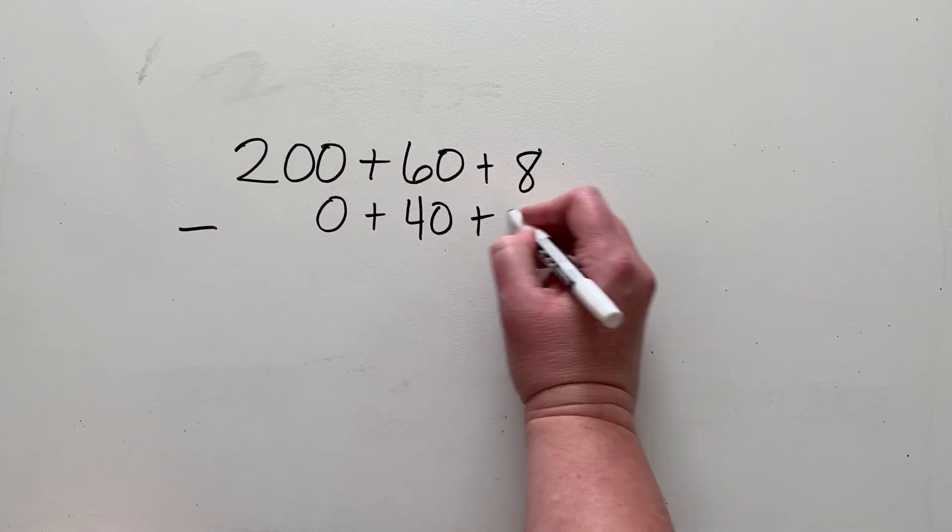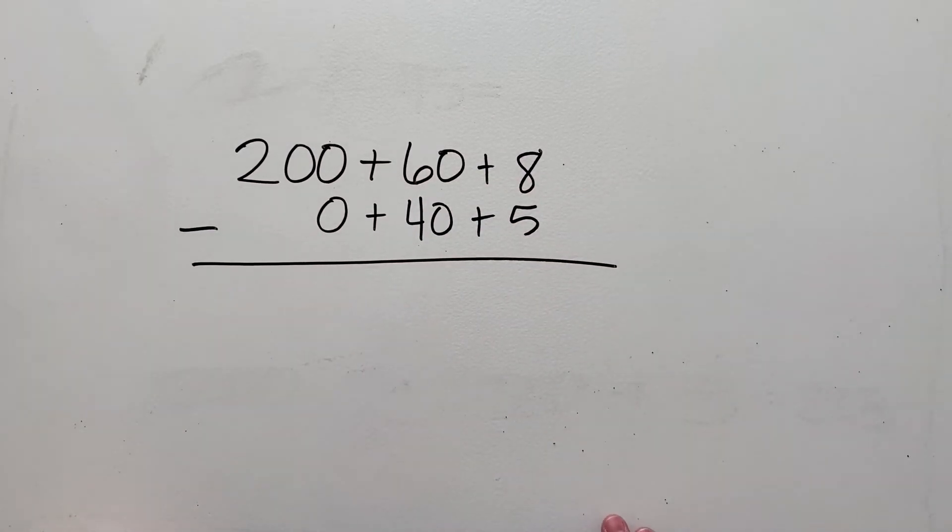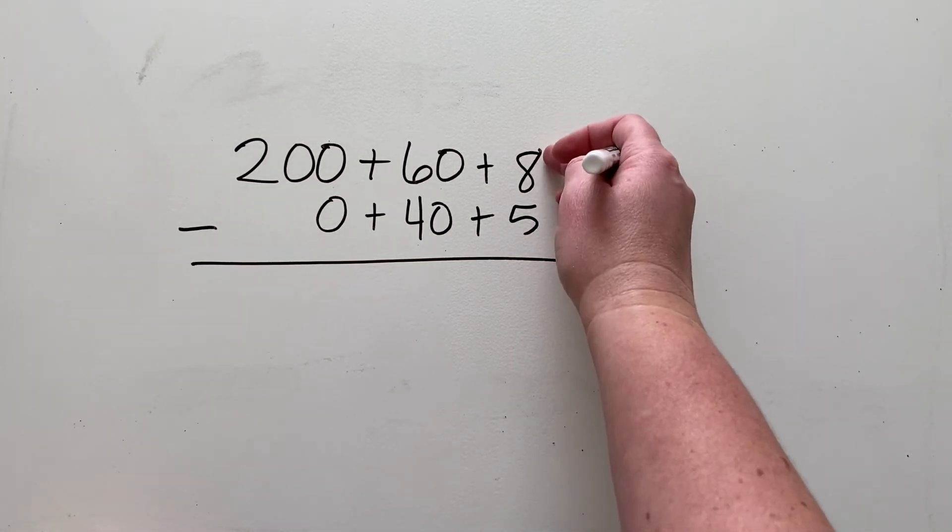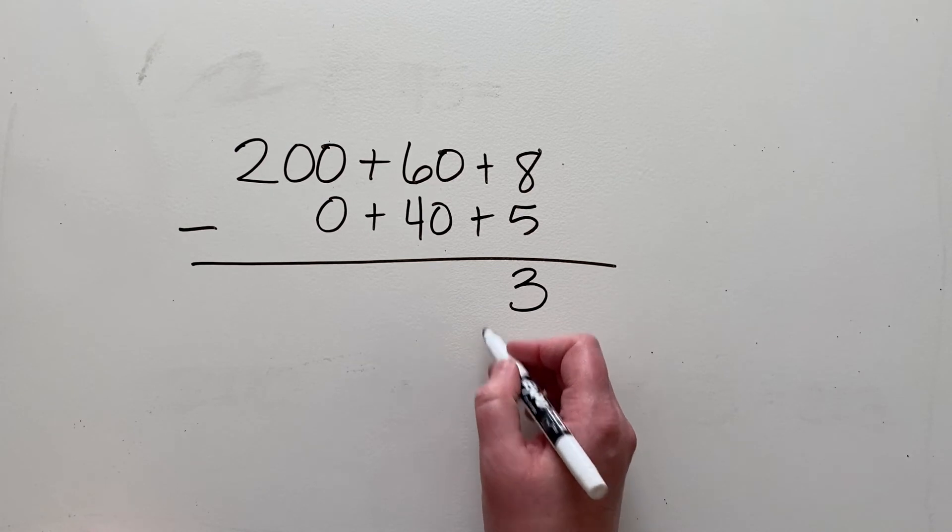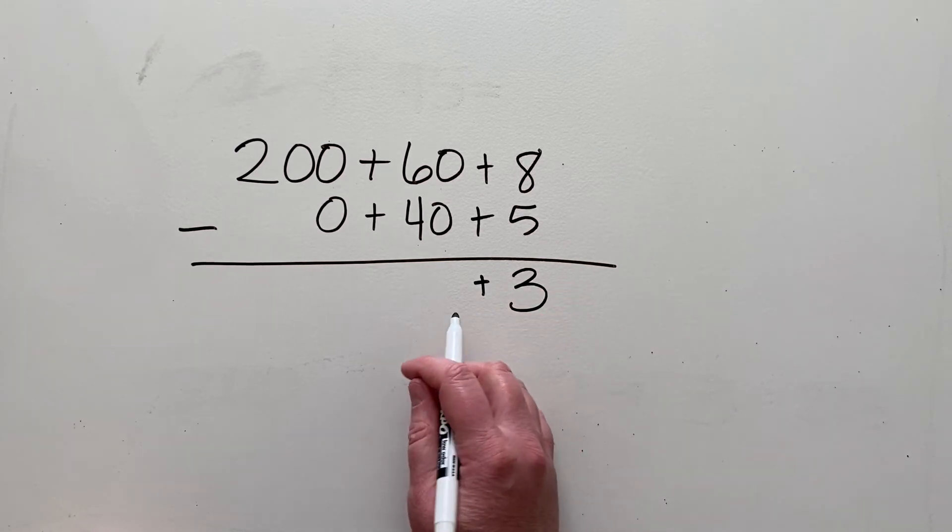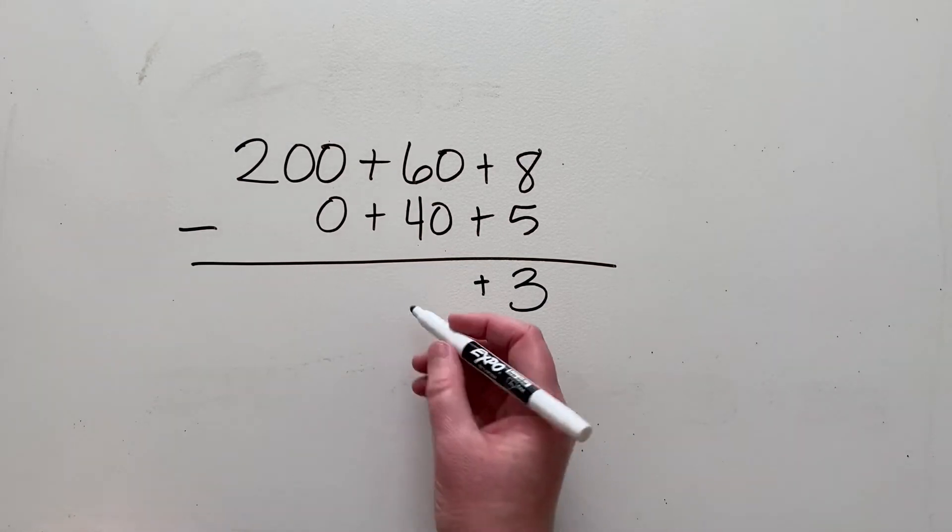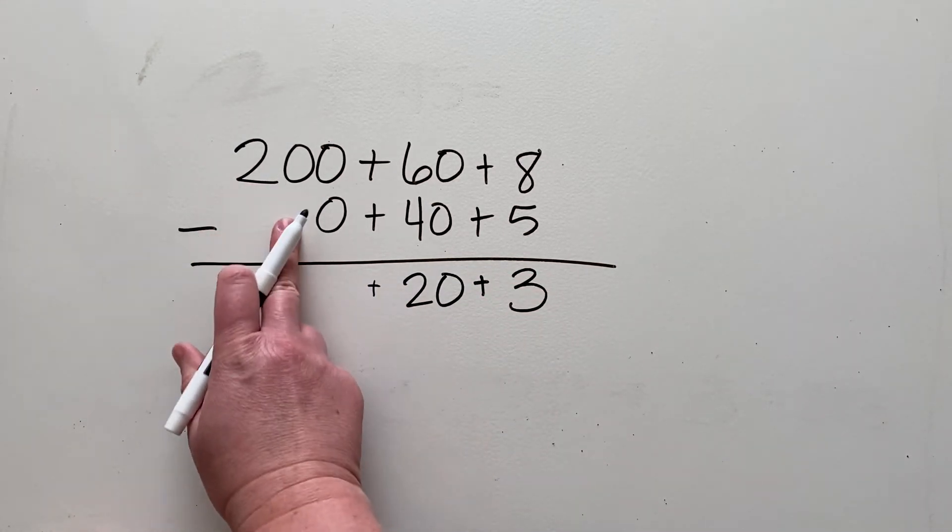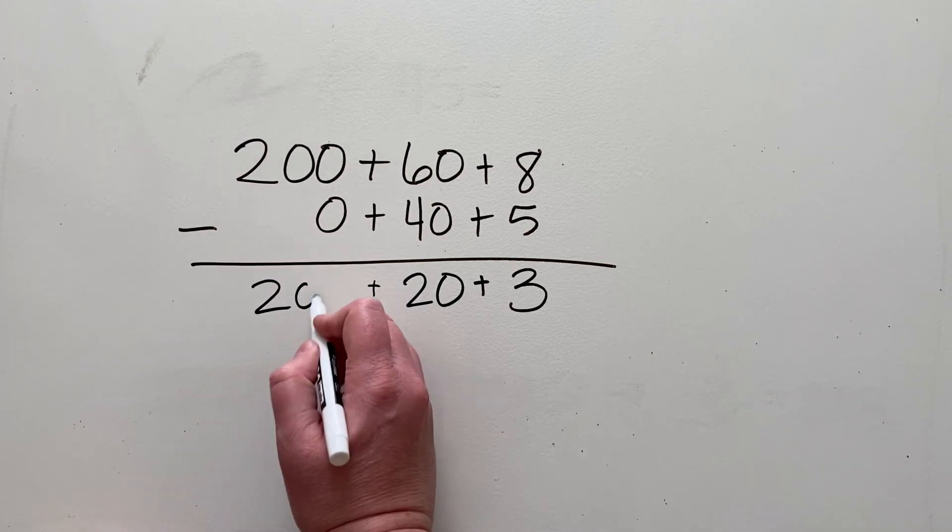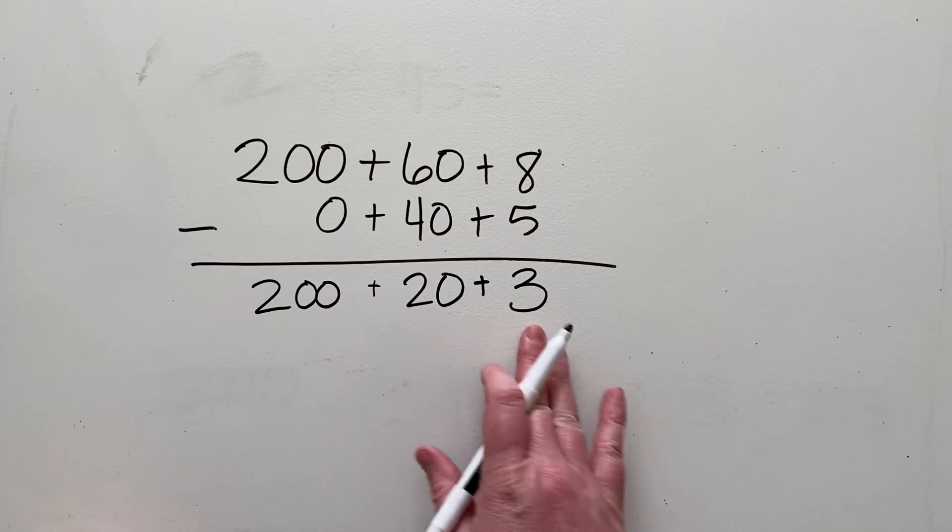So 268 minus 45. So again looking at my ones place, if I do 8 minus 5, then what is left is 3. And it's a positive number so I do that addition sign. And then 60 minus 40, that leaves me with 20. And then 200 minus nothing equals 200. If I add all of those parts together, 200 plus 20 plus 3, that equals 223.